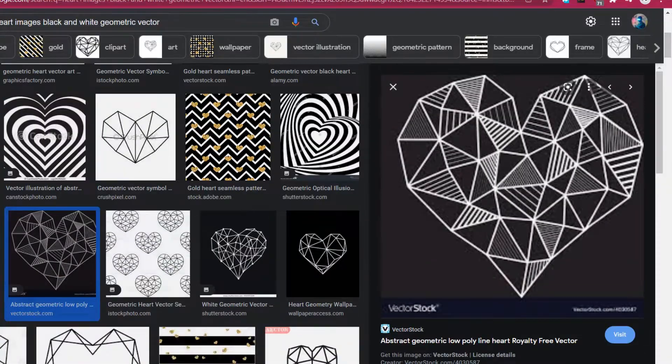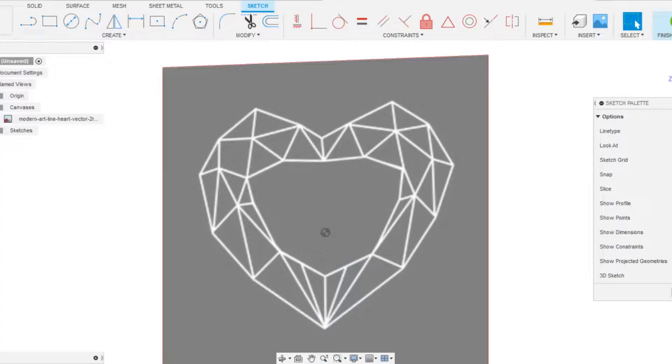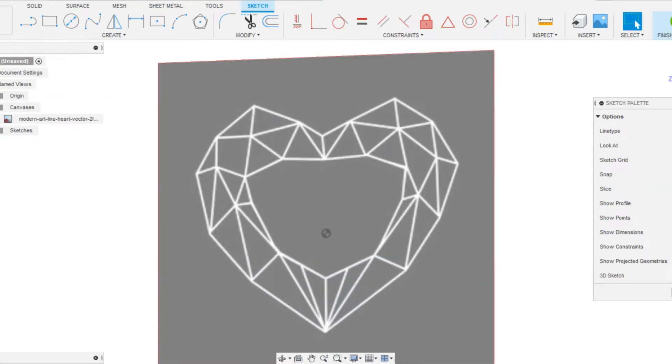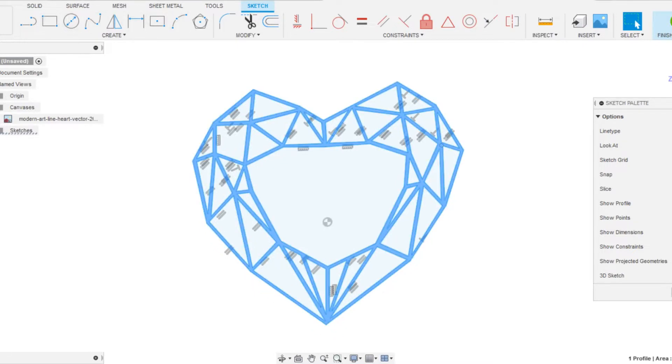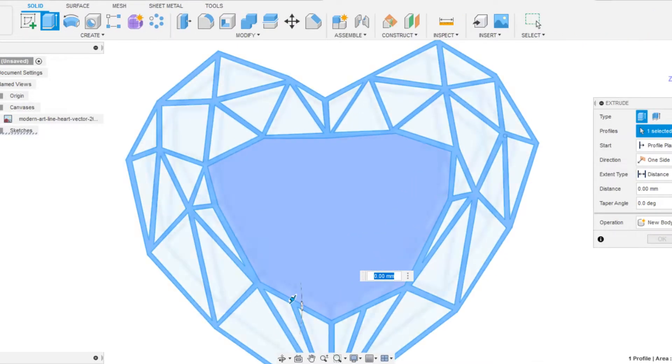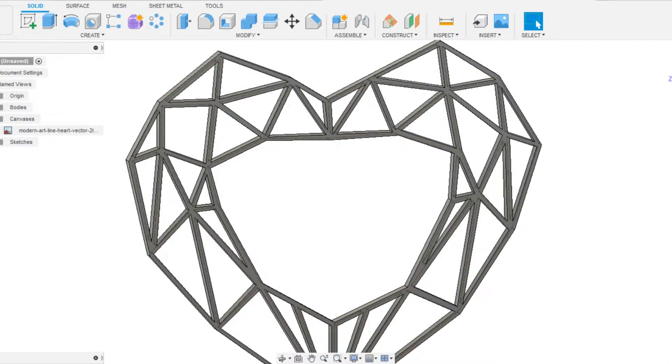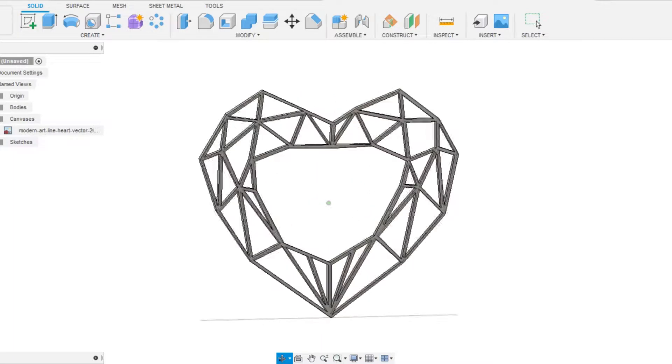I first searched for a heart image that would be suitable for adding LEDs and components. I selected this image in the end. I first imported this image on Fusion 360 and sketched the exposed white lines. Then I used the exclude function to make this 2D sketch into a 3D shape.